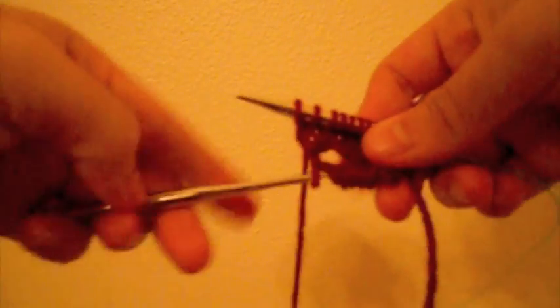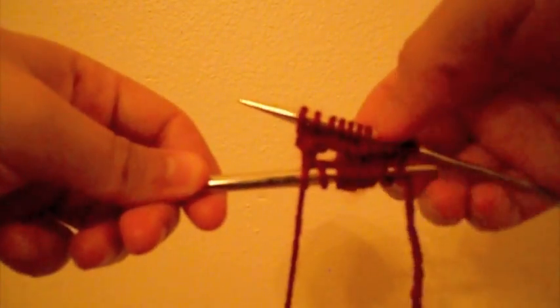Once you reach the end of the row, put the stitches from the cable onto the now empty left needle and you can turn your work.